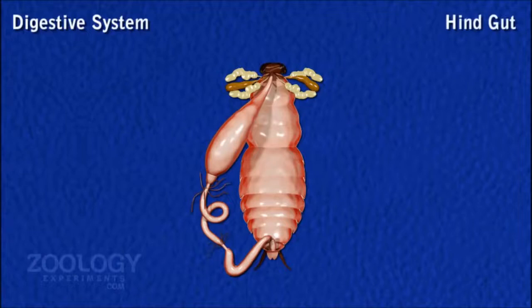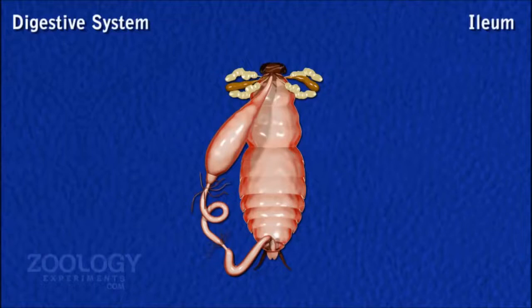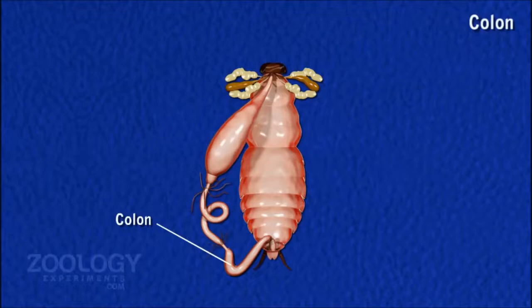Hindgut. The posterior one-third part of the alimentary canal forms the hindgut. It is divided into three regions: ileum, colon, and rectum. Ileum is a narrow and short tube, and its posterior end is characterized by the possession of six tiny triangular lobes internally, bearing spicules and axons as a sort of sphincter.